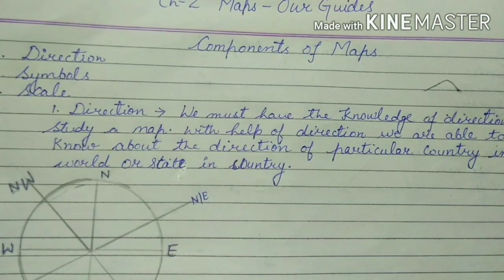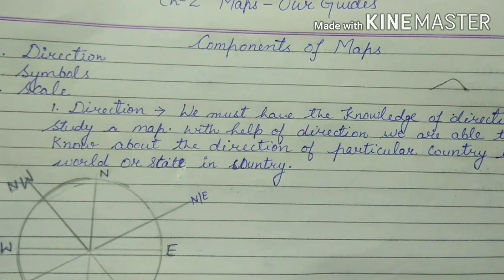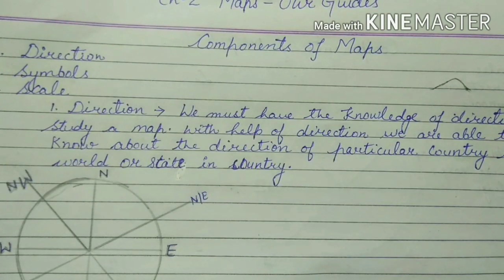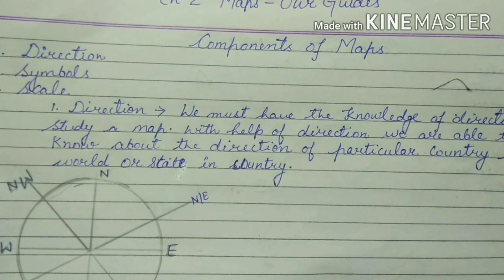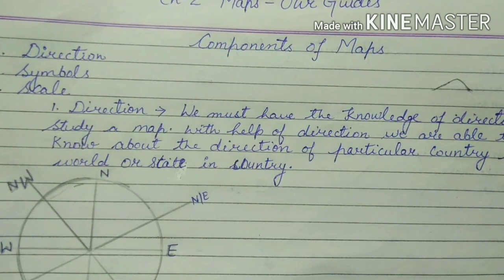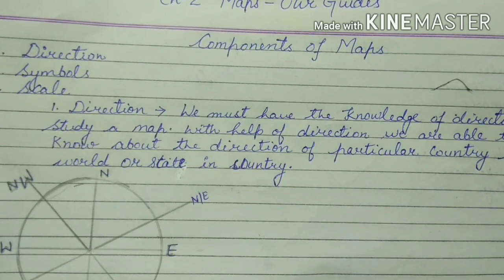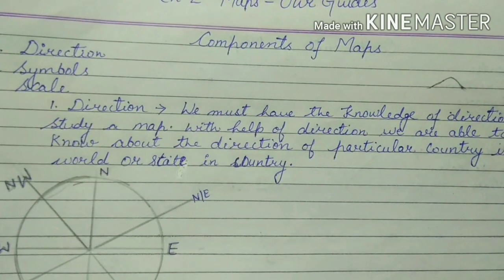Firstly, we will study direction. Now, what is direction? What are its uses? We must have knowledge of direction to study a map. When we want to study a map, we need to know about directions. With the help of direction, we are able to know about the direction of a particular country in the world and a particular state in a country.